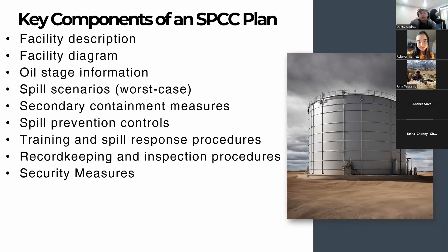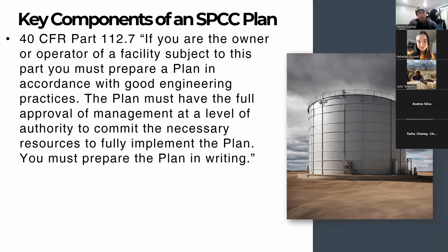Key components of an SPCC plan — this refers mainly to Tier 2 and Tier 3 plans, as the Tier 1 EPA template is a bit watered down. You need a facility description, a facility diagram, oil storage information, a list of spill scenarios including your worst-case spill scenario, secondary containment measures, spill prevention controls, training and spill response procedures, record-keeping and inspection procedures, and security measures. In the next few slides, I'll be listing regulations straight from 40 CFR Part 112 that back up this list.